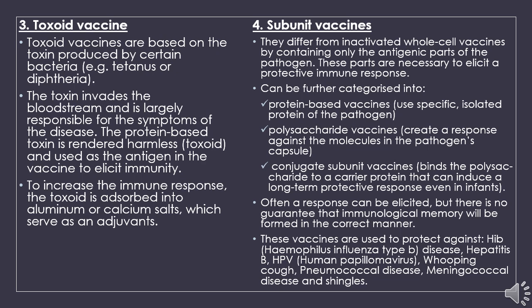Next is the toxoid vaccine, which is produced based on the toxin produced by certain bacteria, for example tetanus or diphtheria. Toxoids are an altered form of toxin and are not secreted by the bacteria itself. The toxoid is an inactivated toxin whose toxicity has been suppressed while its immunogenicity is maintained — in other words, it will not produce symptoms of disease but the immune response will be elicited by the action of the toxin, which acts as the antigen.